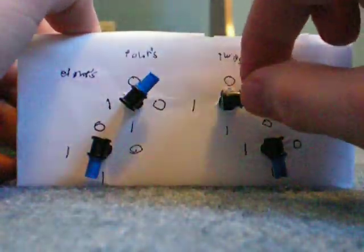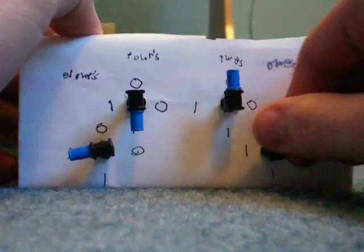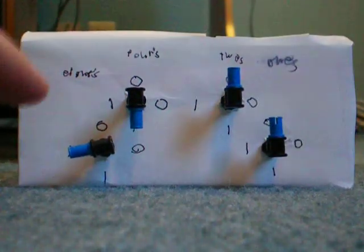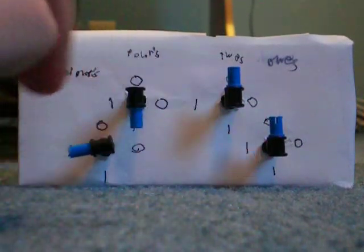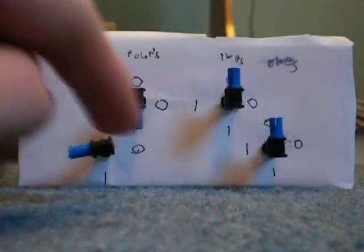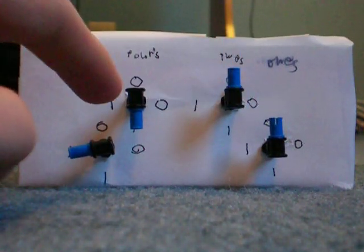And we end up gathering one-one-zero-zero because these are set to one, those are set to zero. And one-one-zero-zero is an eight plus a four, which is twelve. Seven plus five is twelve.